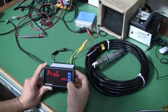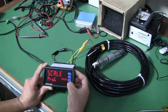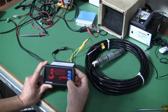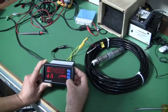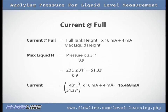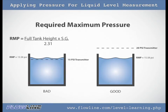To configure your pressure level transmitter, you will need an indicator or controller to translate the pressure signal into a liquid height reading. You may need to use some simple math equations to calculate the maximum liquid height, current at full, and required maximum pressure, in order to measure your intended application in terms of gallons, inches, feet, or meters. These topics will be discussed in the next level learning.